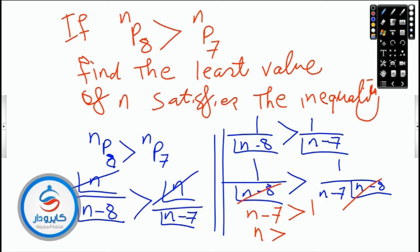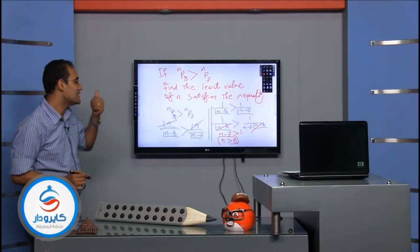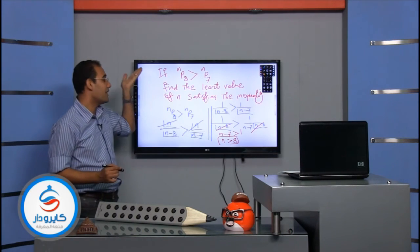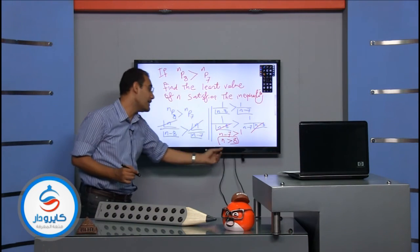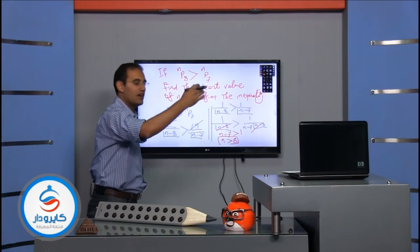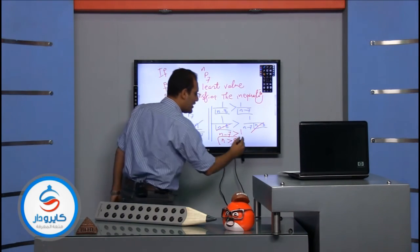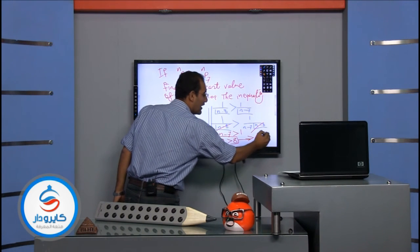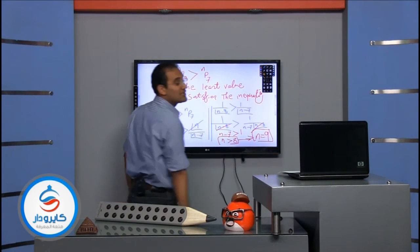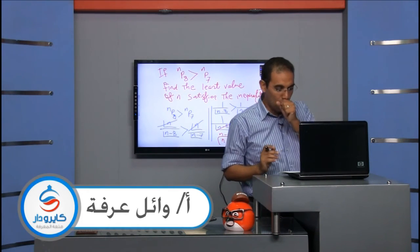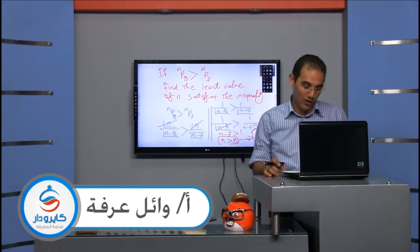So n minus seven is greater than one, which means n is greater than eight. The least value of n can be nine, ten, eleven — but the least is nine. Therefore n equals nine is the least value which satisfies the inequality.